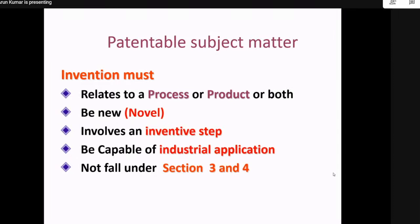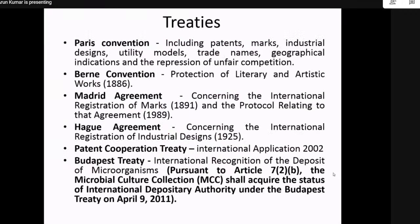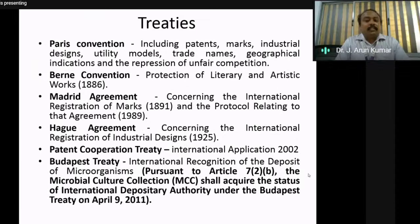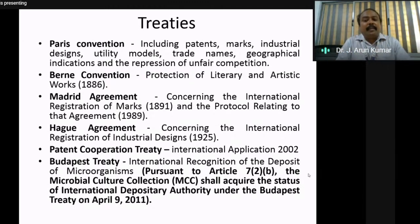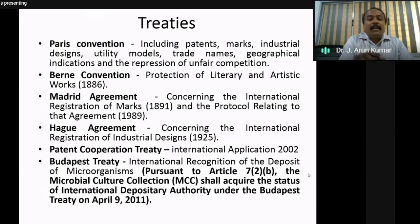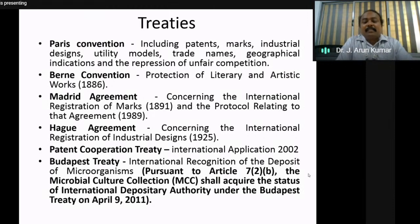The basic treaties under WIPO include the Paris Convention, which is a complete package protecting industrial designs, patterns, marks, utility models, and trade names — from a safety pin to a fermenter, anything is an industrial design. The Berne Convention protects literary and artistic works. The Madrid Agreement covers international registration of marks — for example, when a brand like McDonald's wants to protect its mark internationally, they use this agreement.